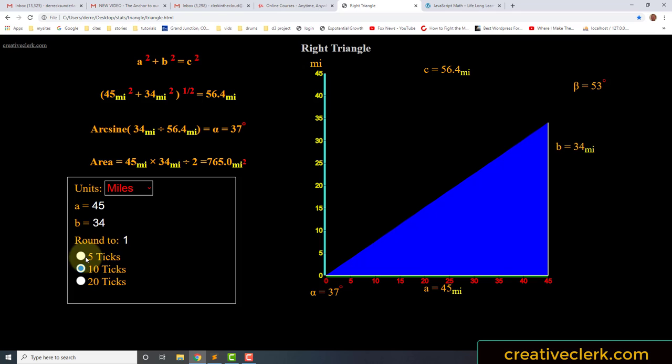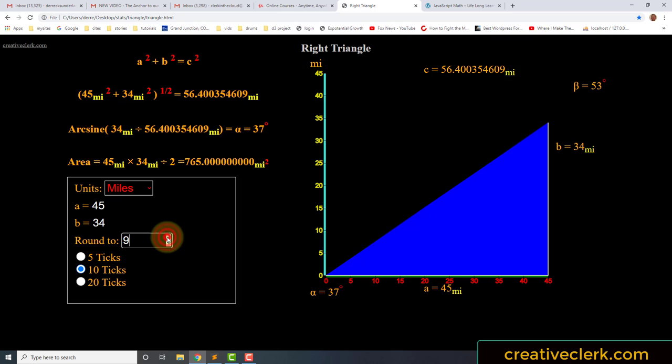Okay, so now this round is where you can determine how many numbers you want to round your number off to. We can go up to 10, which is a lot.